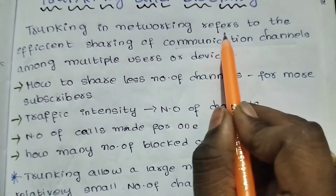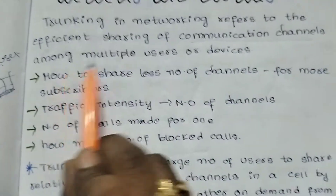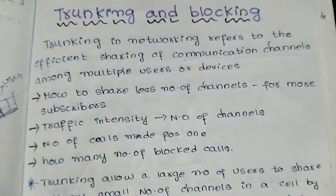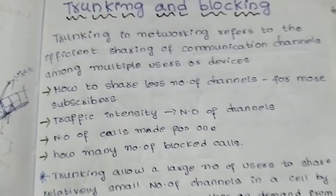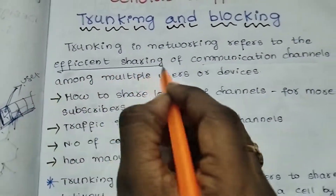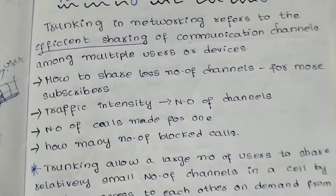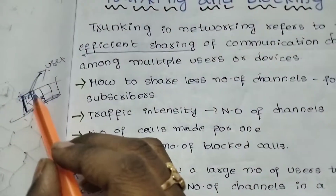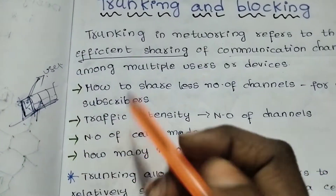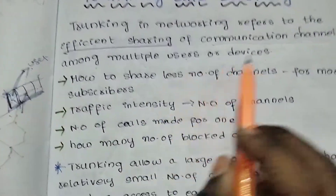Trunking and Networking refers to the efficient sharing of communication channels among multiple users or devices.